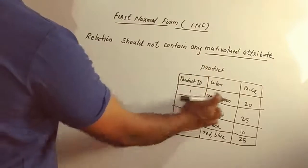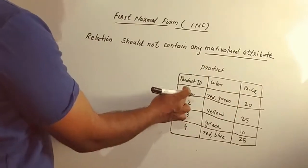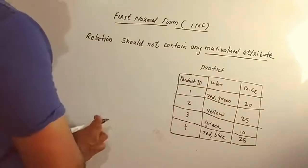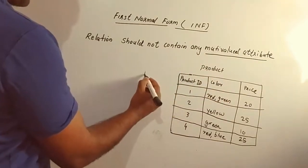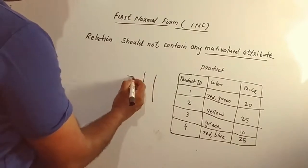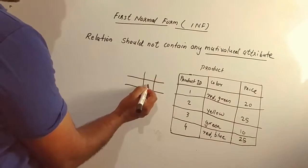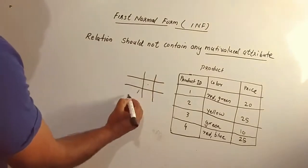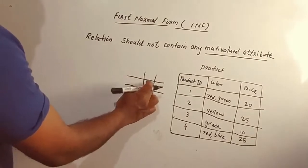If the row is intersecting at one point, it is called multi-valued attributes. The row is intersecting — it's intersecting at the point. This is the cell: one cell comes in one row.